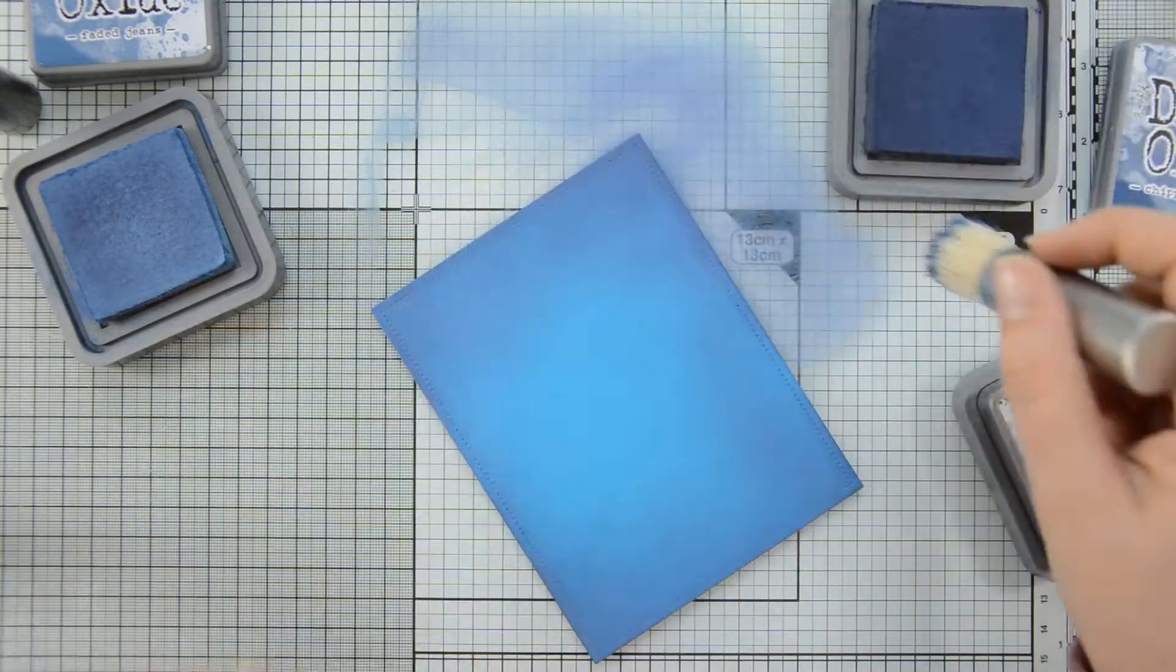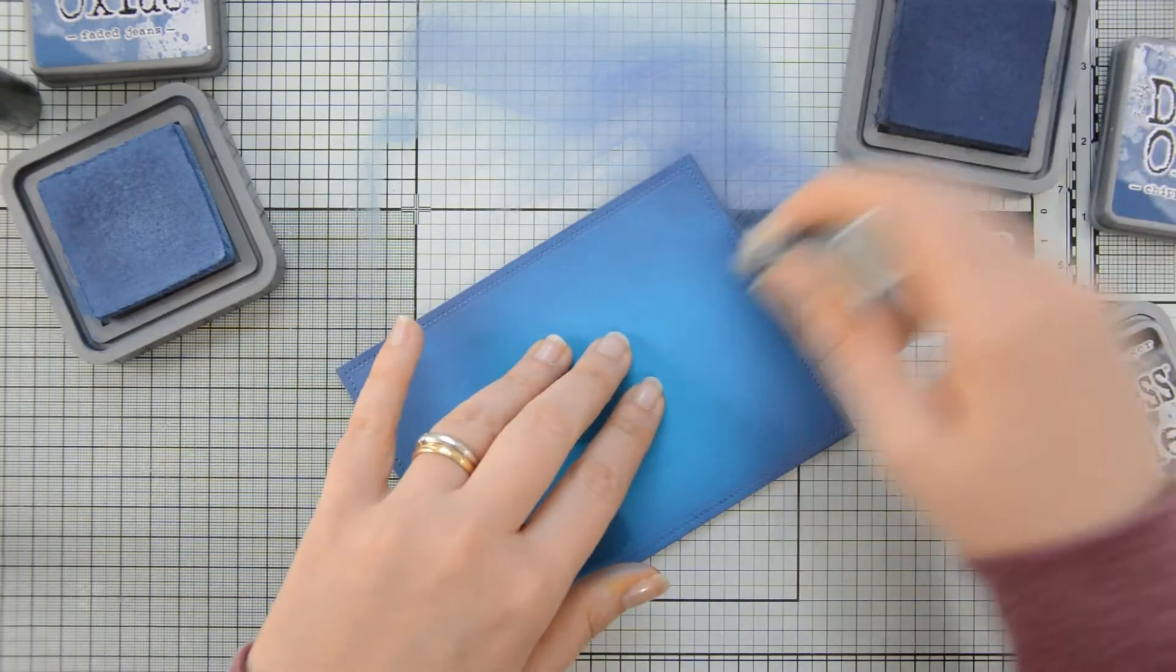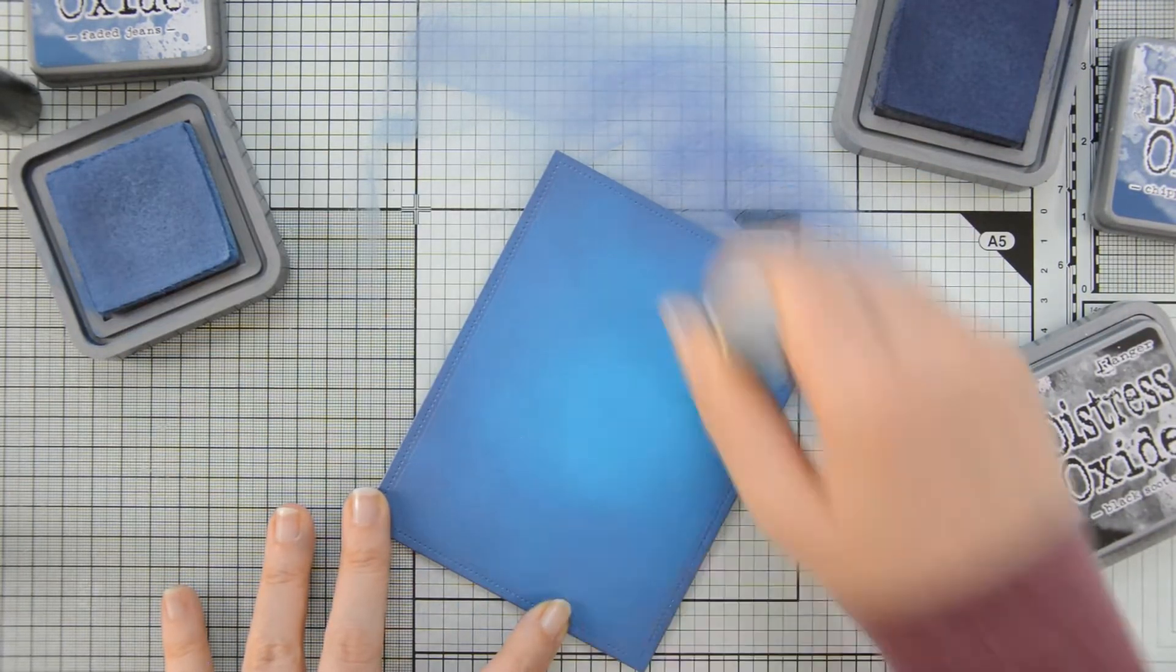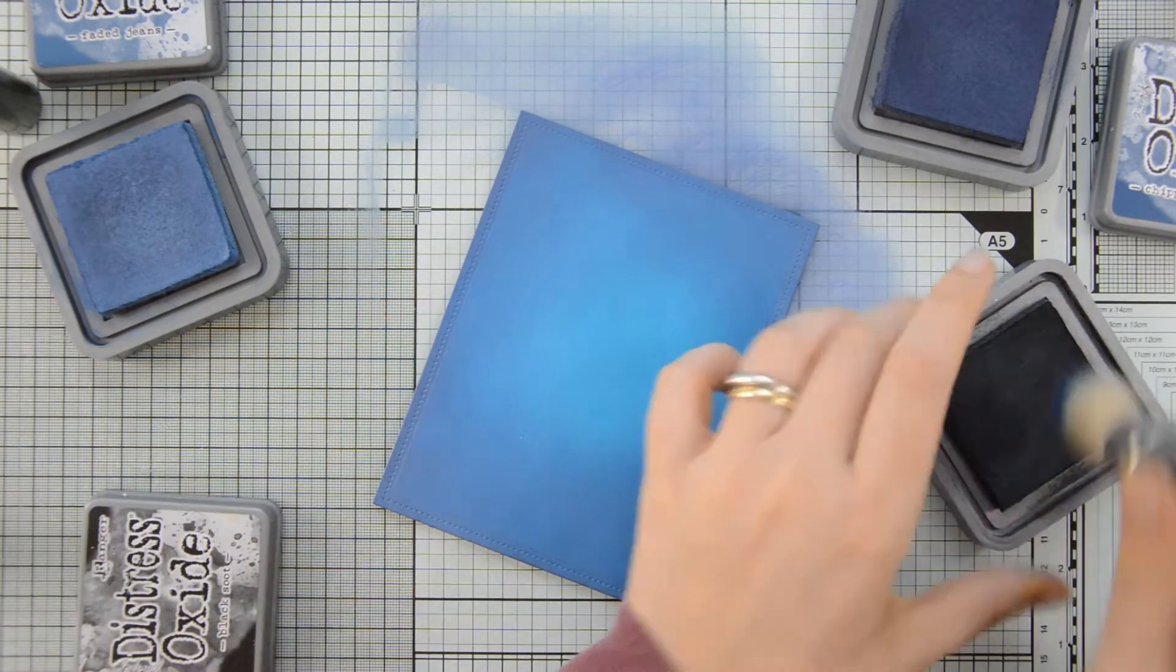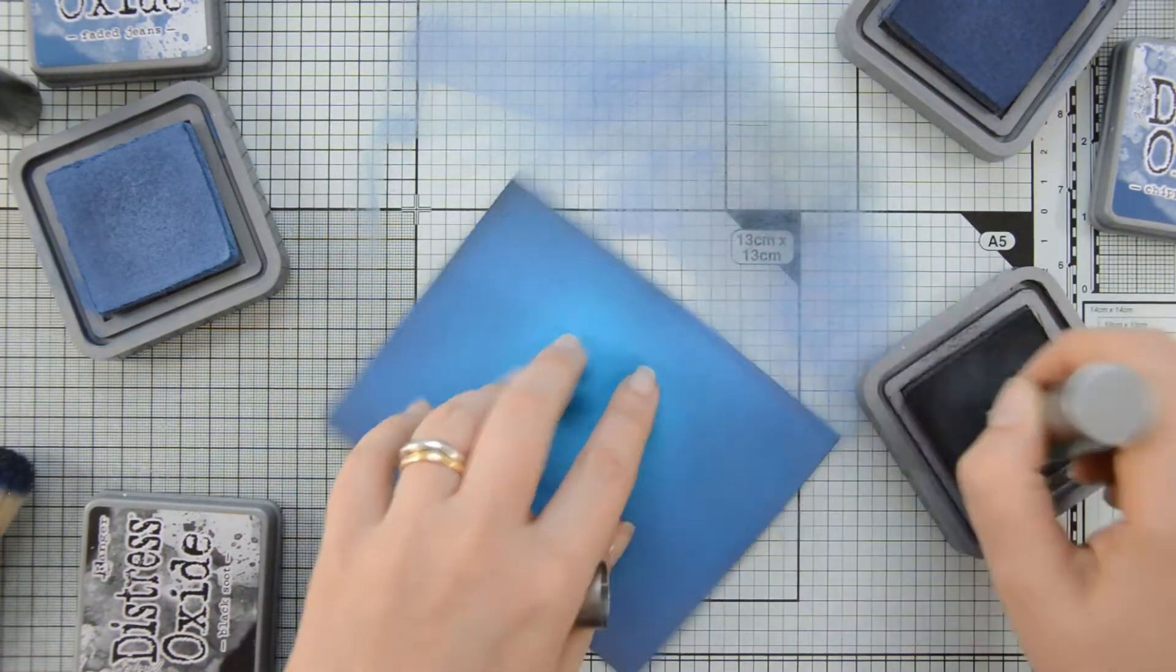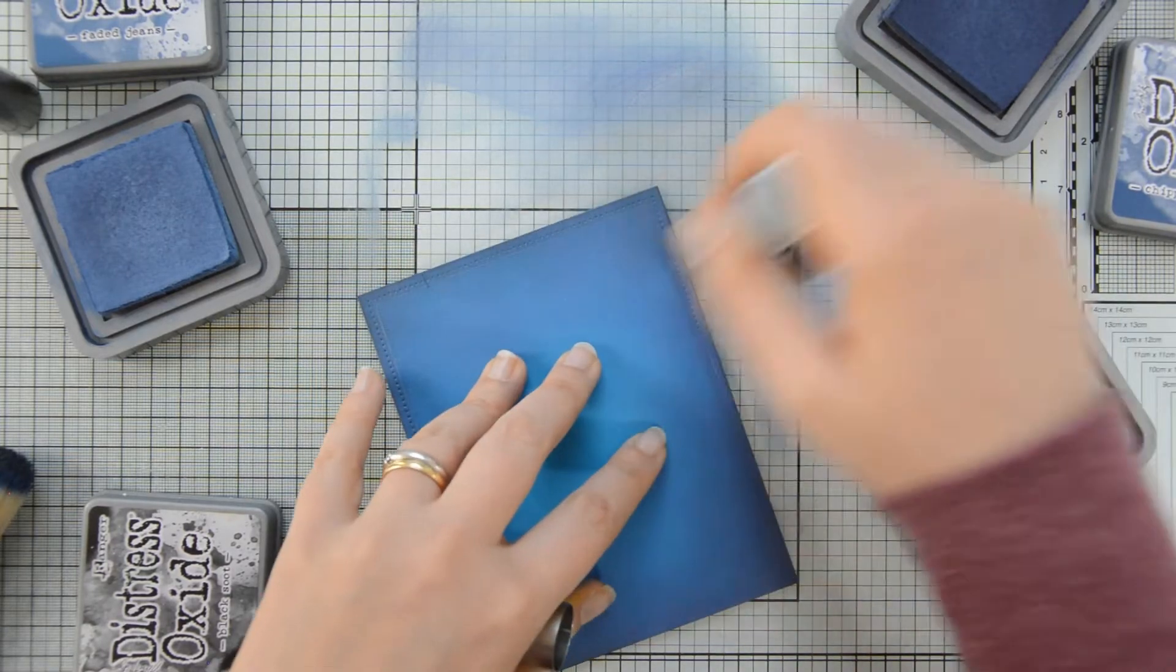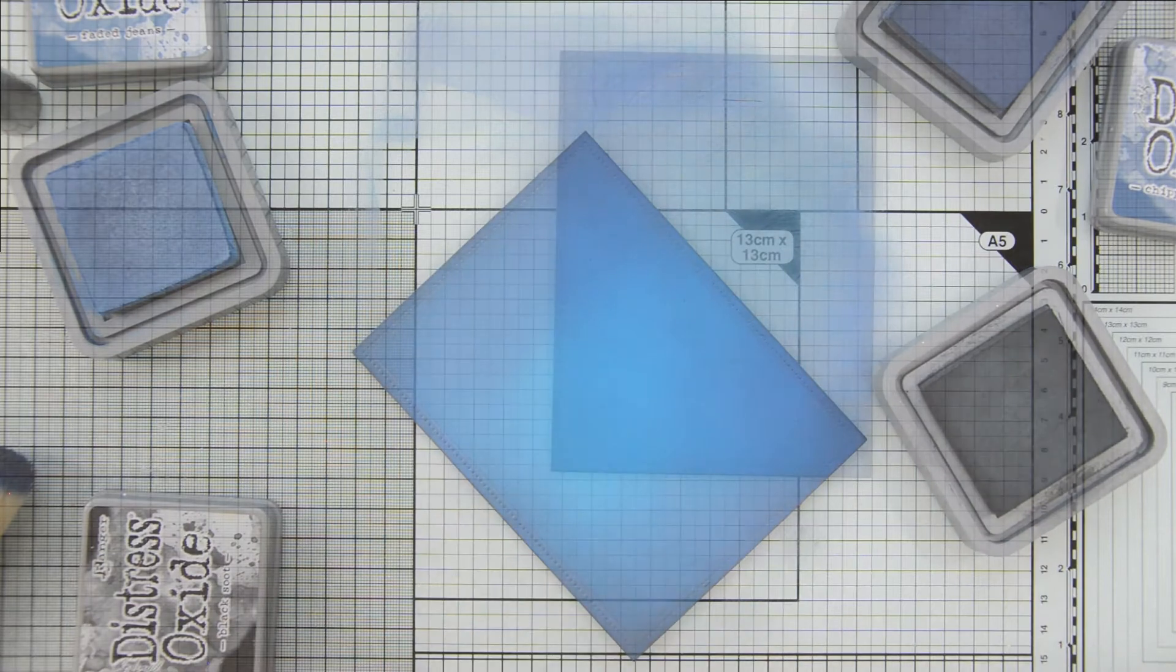So I started by first blending my Faded Jeans, which will be the lightest color. I then darkened up the edges with Chipped Sapphire. And then using a different brush, I'm going to add some Black Suit Distress Oxide to the very edges of this panel. And because I started with some colored cardstock as my base, the ink blending process was really quick.